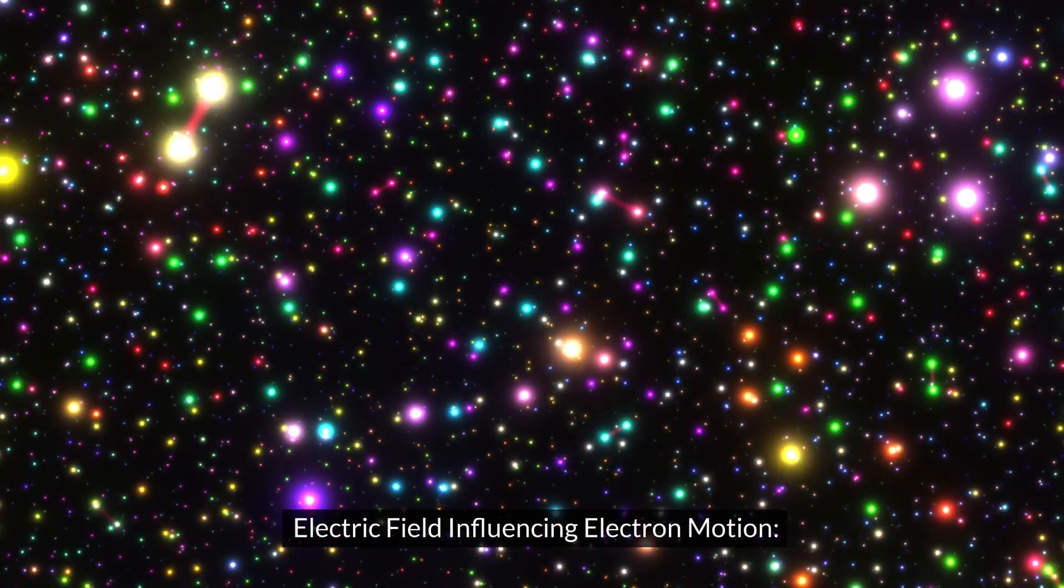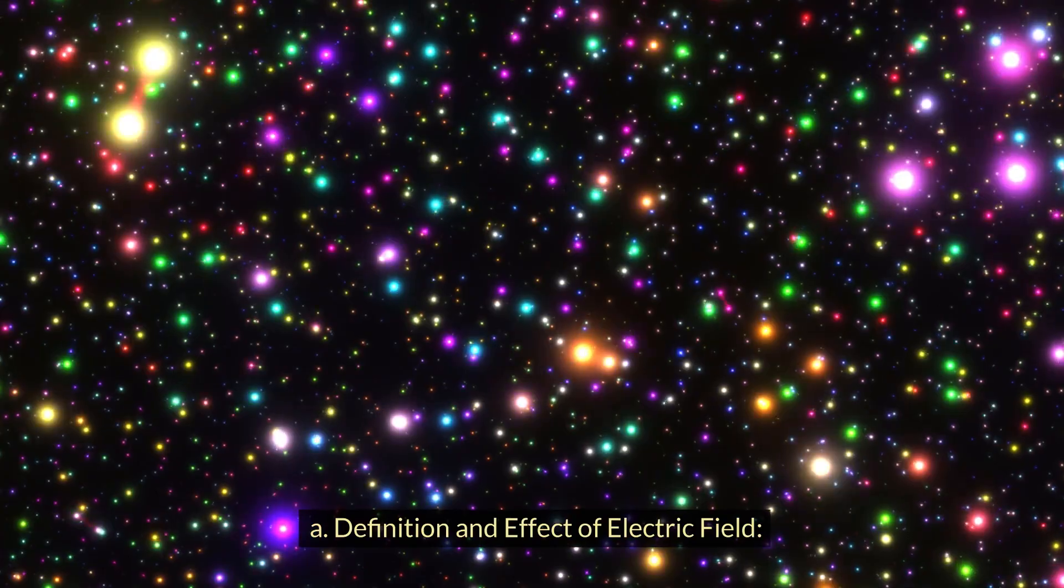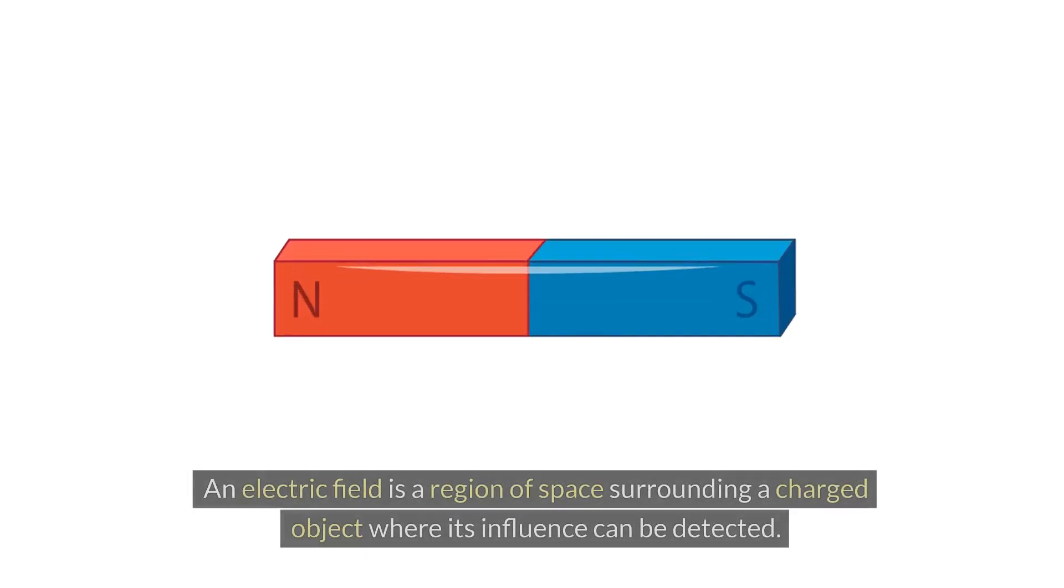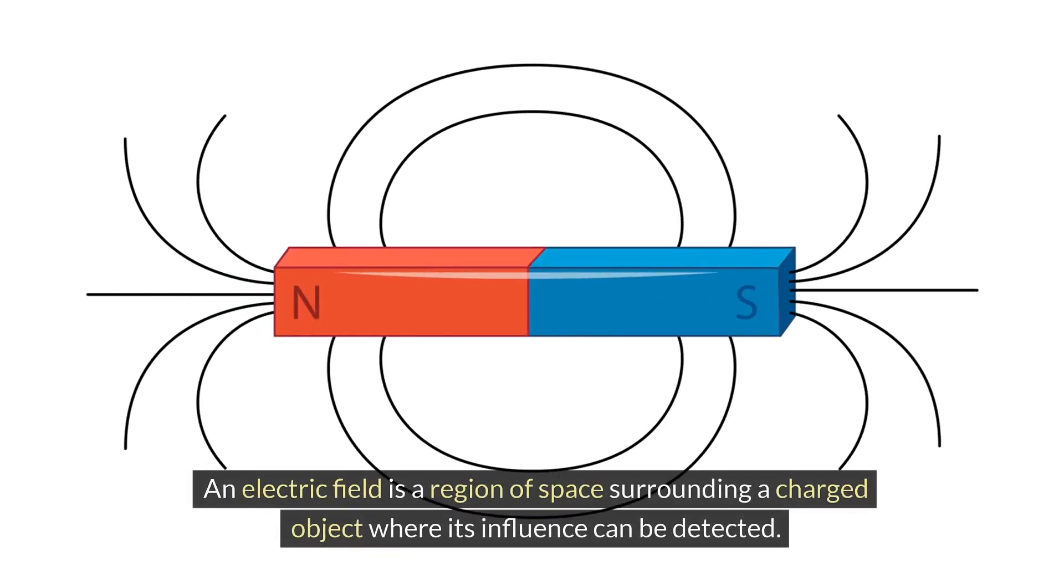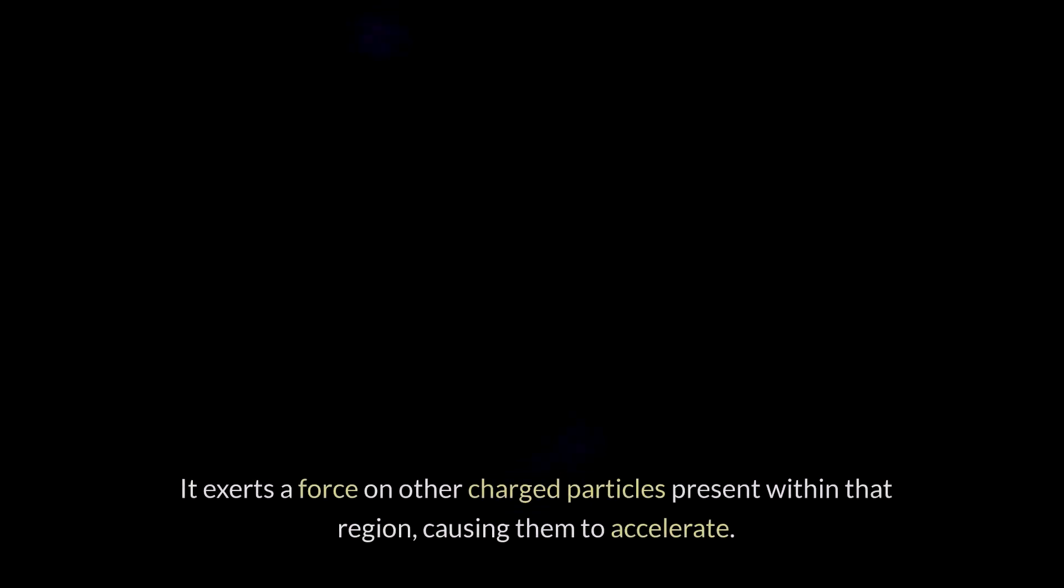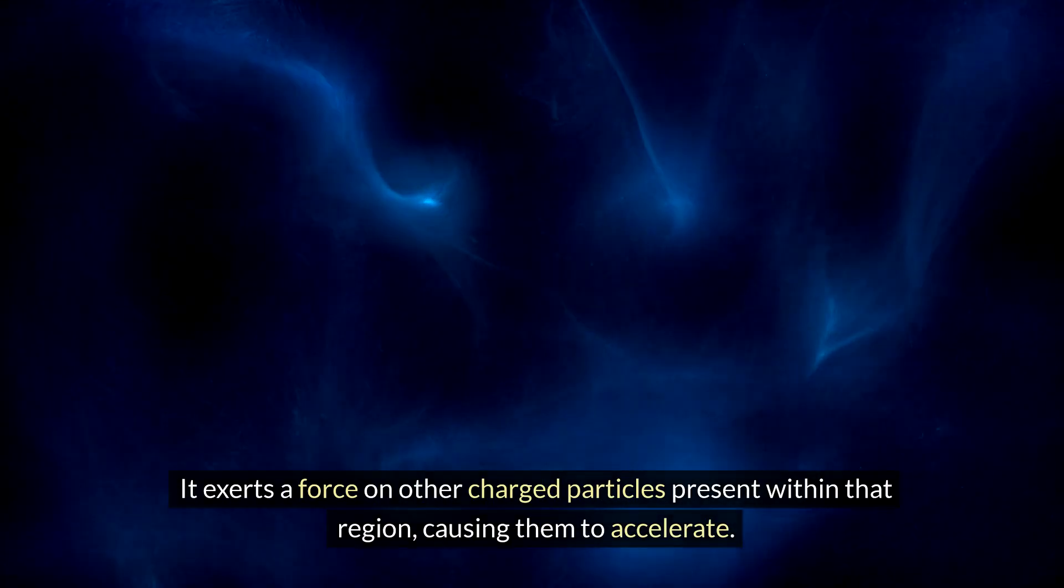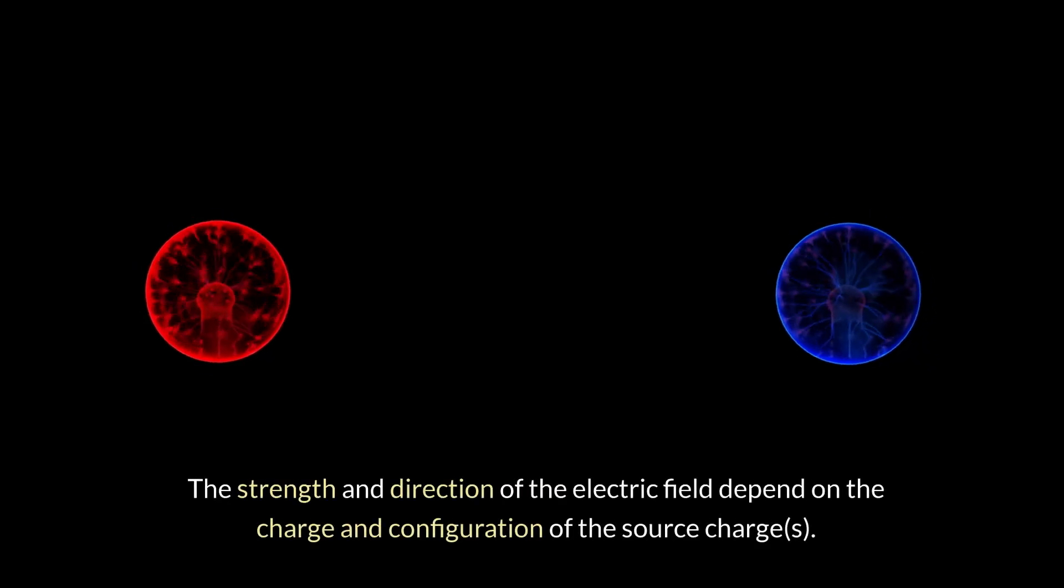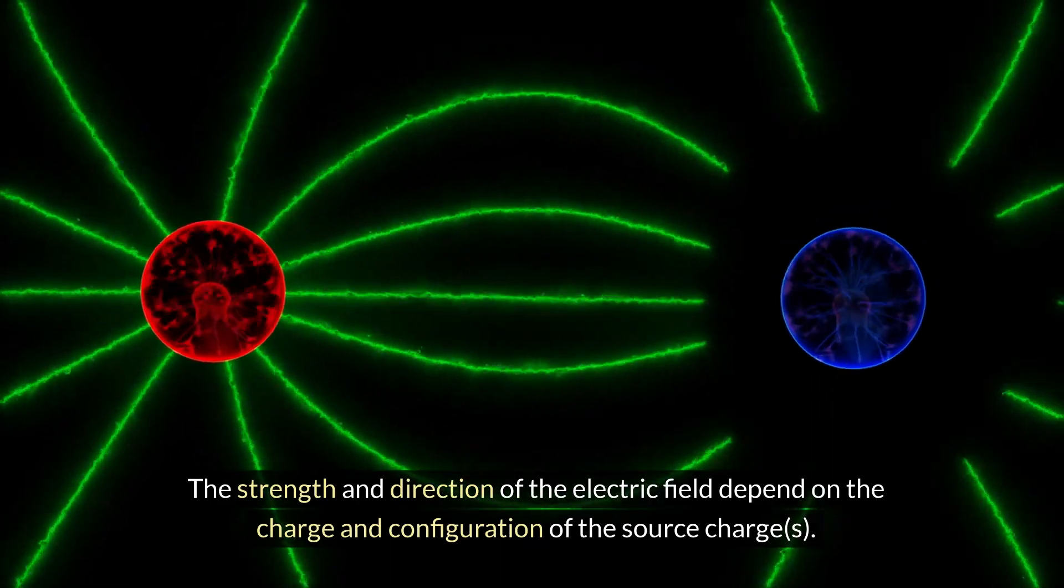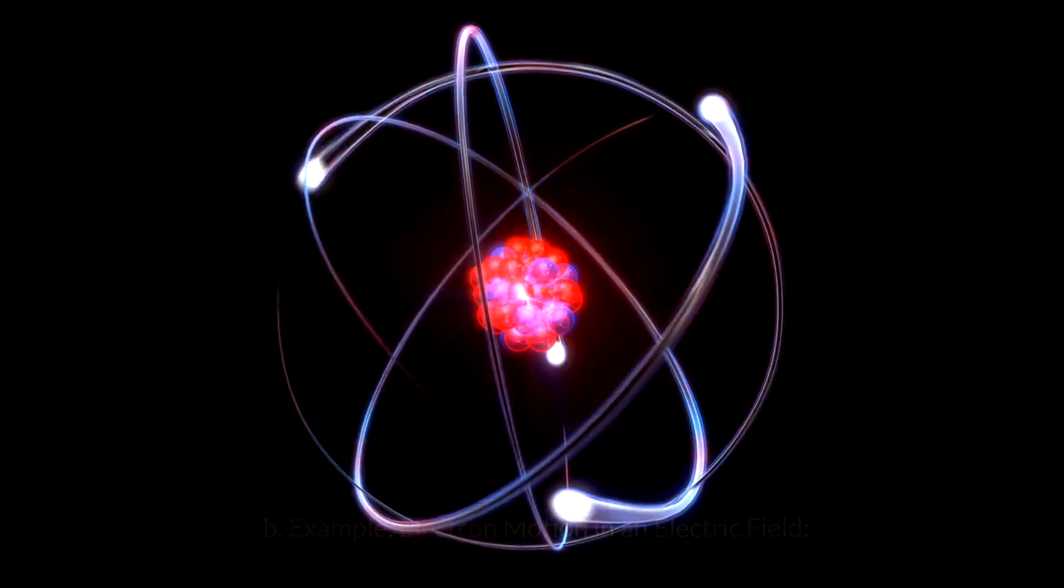Electric field influencing electron motion. Definition and effect of electric field: An electric field is a region of space surrounding a charged object where its influence can be detected. It exerts a force on other charged particles present within that region, causing them to accelerate. The strength and direction of the electric field depend on the charge and configuration of the source charges.